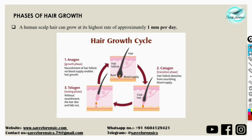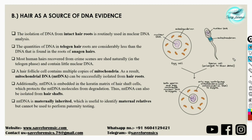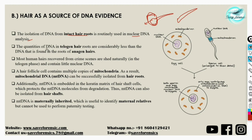Regarding hair as a source of DNA evidence: isolation of DNA from intact hair roots is routinely used in nuclear DNA analysis. If a hair sample found at the crime scene contains the root, nuclear DNA can be analyzed because it contains living cells. However, DNA quantities in telogen hair roots are considerably less than in anagen hair roots, since anagen hairs have active living cells.